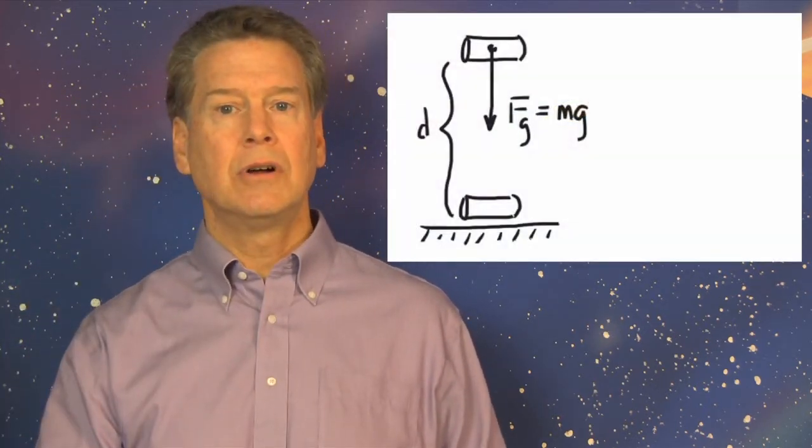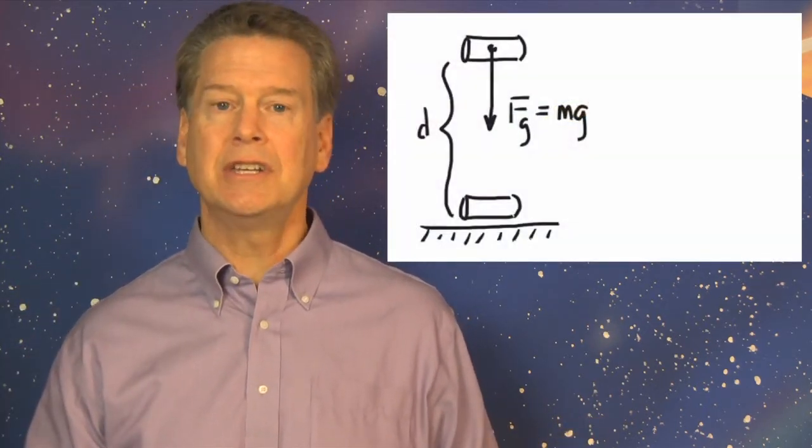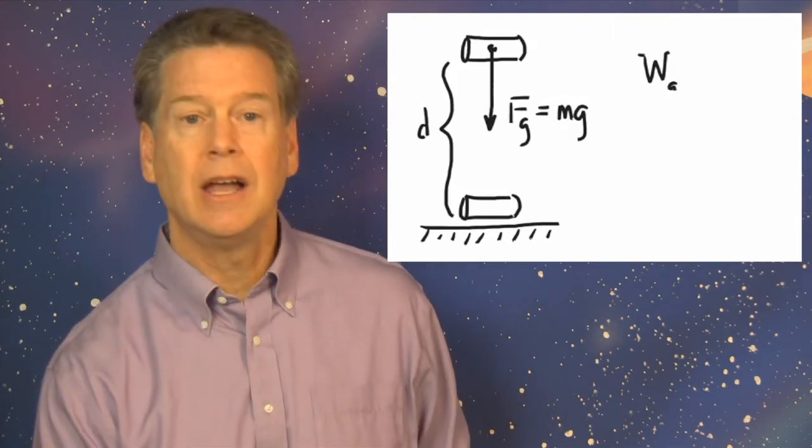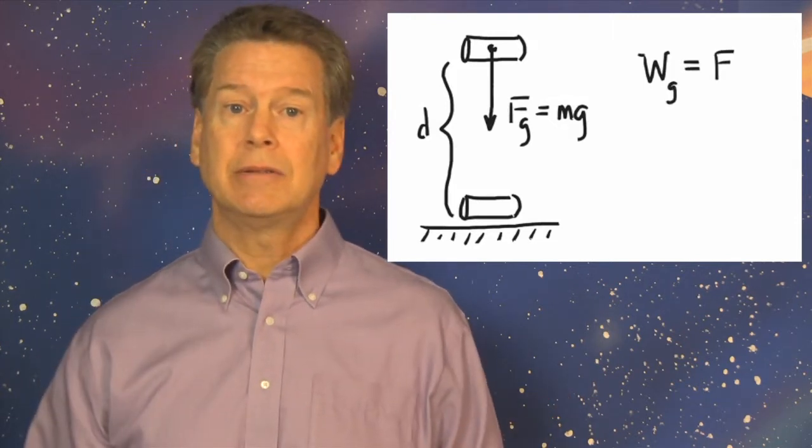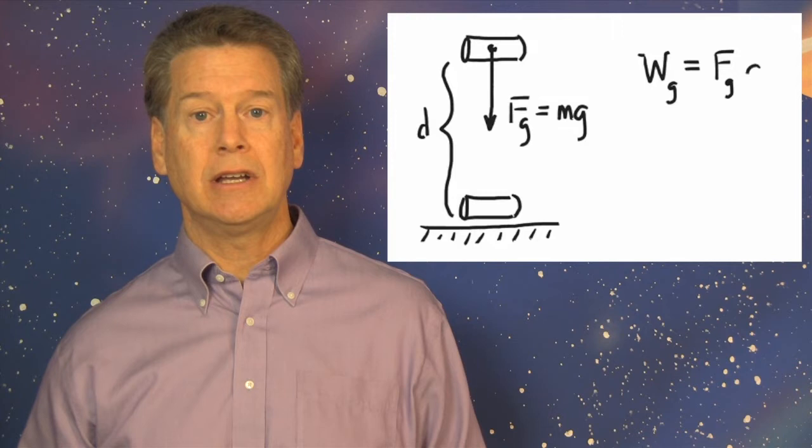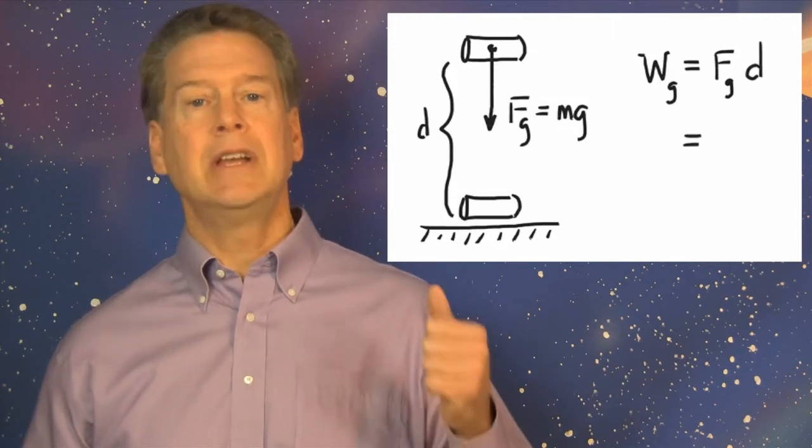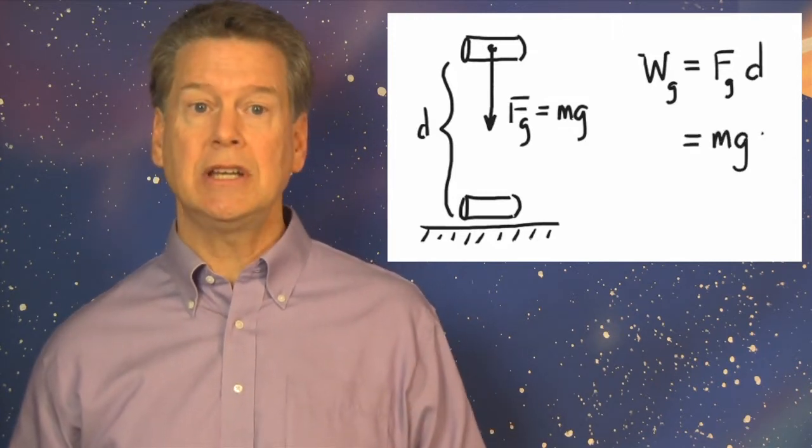The force of impact did work on the falling object and transformed its kinetic energy into thermal energy. But where did the original kinetic energy of the falling object come from? Gravity did work to transfer what form of energy into kinetic energy? W sub G equals F sub G times D equals M times G times D.